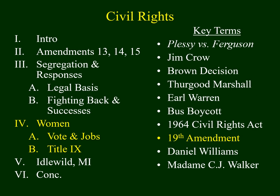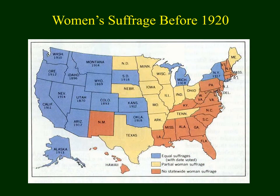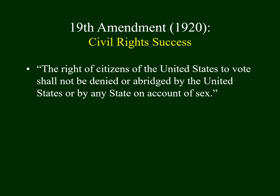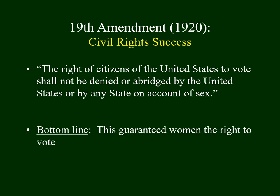Now I'd like to switch gears and talk about women. This map identifies the status of women's suffrage prior to 1920. The blue states indicate states where women had full voting rights before 1920. There were only two states east of the Mississippi that allowed women full voting rights: New York and Michigan. Women's rights were transformed in 1920 when the 19th Amendment passed, guaranteeing all women the right to vote.